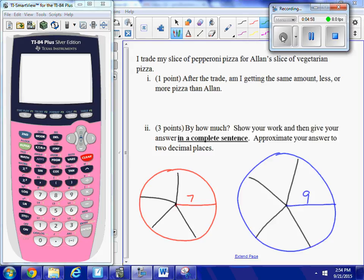Just kind of common sensing it here a little bit - the vegetarian pizza is larger than the pepperoni pizza, so I am getting more. It's a good deal for me. But by how much? How much more am I getting? Now I have to do some work here. So again, I'm going to take two approaches.